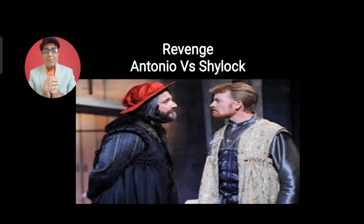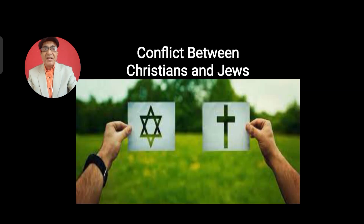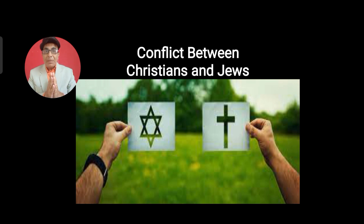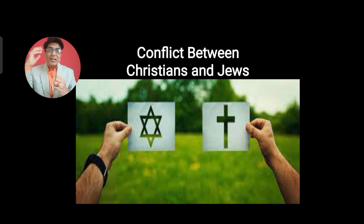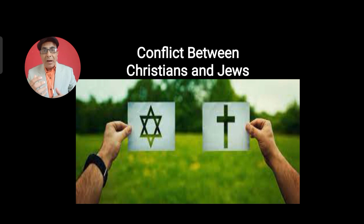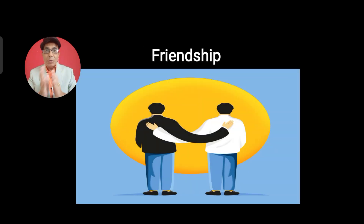Another idea projected by Shakespeare in this play is revenge, again presented through the characters of Shylock and Antonio. On a deeper level, Shakespeare has also presented the conflict between two different communities in Europe: the Christians and the Jews. Since ancient times there had been conflict between them, with Jews working as moneylenders and exploiting the Christians. Shakespeare has represented that historical conflict through these two characters, Antonio and Shylock.